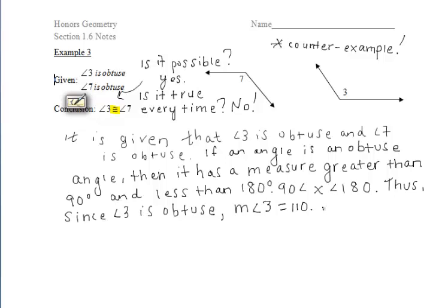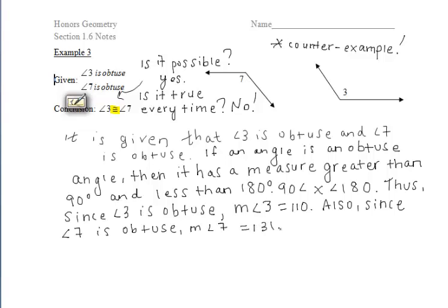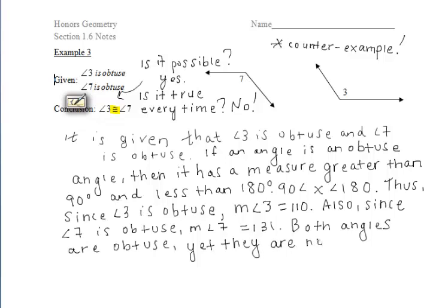110 degrees still fits the restrictions of an obtuse angle — it's greater than 90 but less than 180 degrees. So the measure of angle 3 is 110 degrees. But also, since angle 7 is obtuse, let's come up with another angle measure. Another obtuse angle would be 131 degrees. So angles 3 and 7 are both obtuse, with angle 3 being 110 degrees and angle 7 being 131 degrees. Yet they're not congruent. So it satisfies our given information, but it does not satisfy the conclusion.